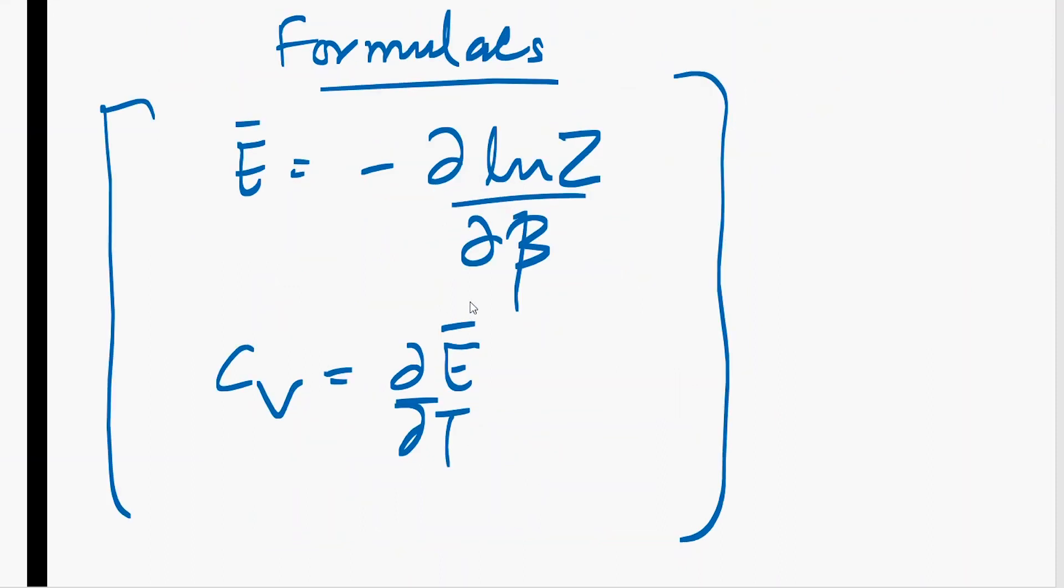Summarizing all the formulas that we are going to use in our question solving. In this question, we have used these two formulas: the average energy in terms of Z and beta. If we are given the partition function, we simply have to differentiate the log Z term with beta.